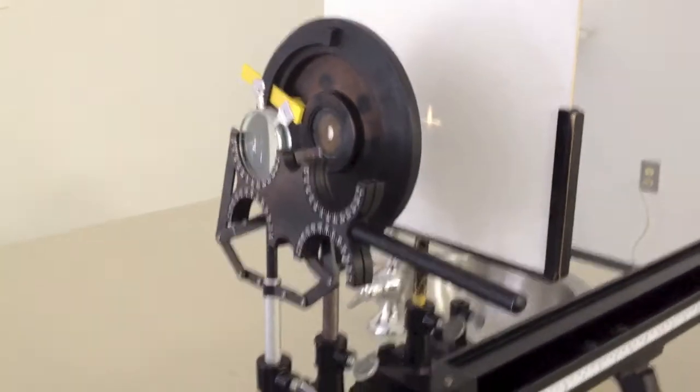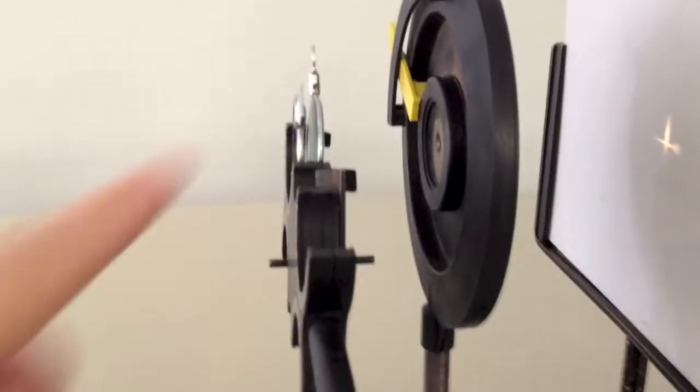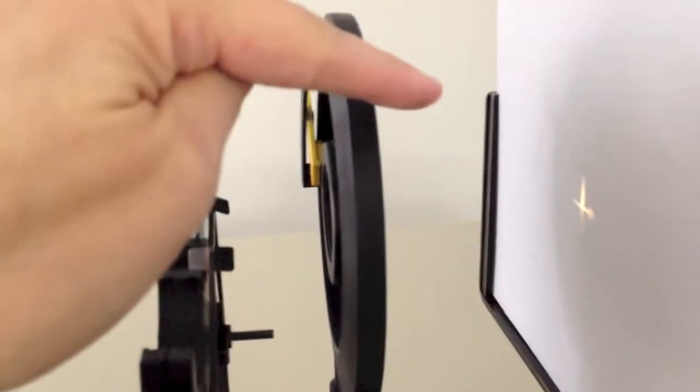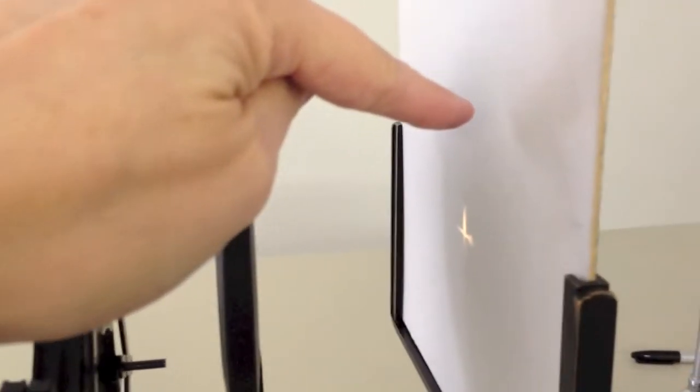Now what we have set up is a model eye and you have the optics of your eye here. You have the pupil of your eye here and then of course the retina back here.